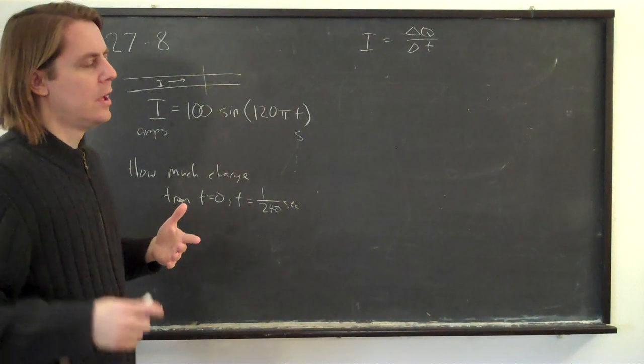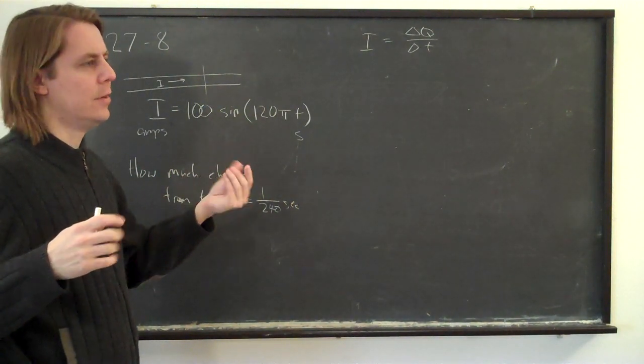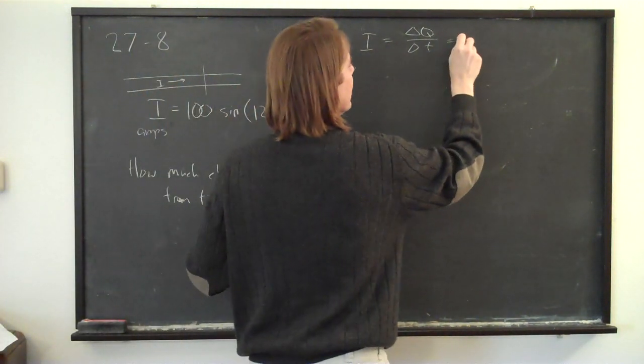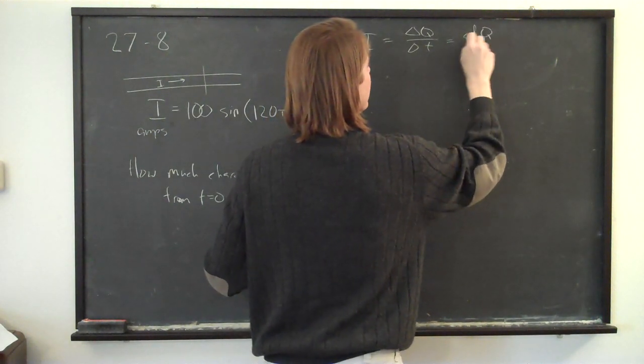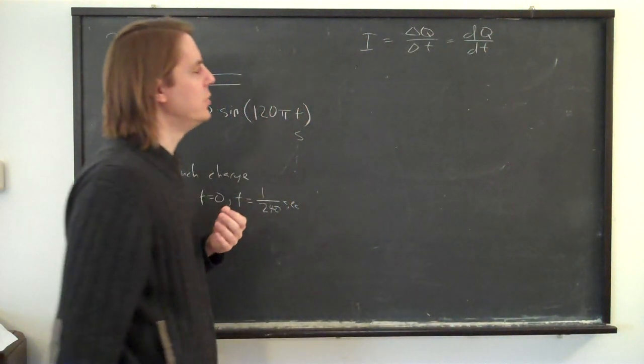But we also said you can take that down to the limit of a very small delta T, and write it as a differential. Current is really just the rate of flow of charge, dQ dt.